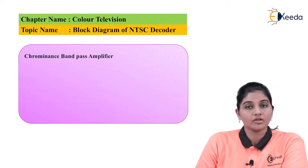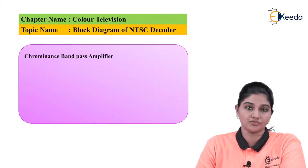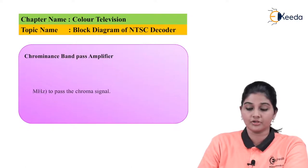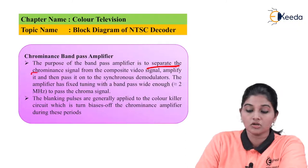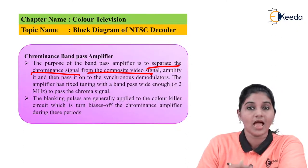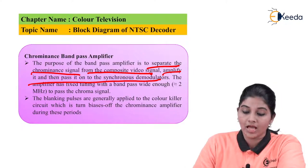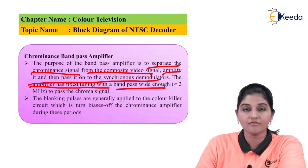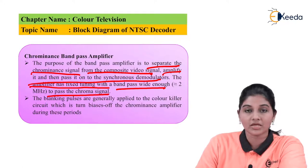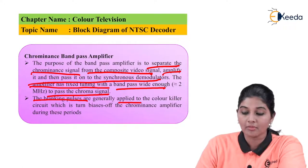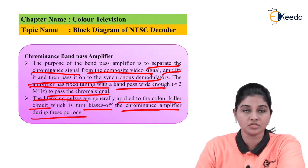The next circuit used in the NTSC decoder is the chrominance bandpass amplifier. As its name indicates, it acts as a filter. The purpose of the bandpass filter is to separate the chrominance signal from the composite video signal, amplify it, and then pass it to the synchronous demodulator. The amplifier has fixed tuning and a bandpass frequency of approximately 2 megahertz that passes the chroma signal. The blanking pulses are applied to the color killer circuit which turns off the chrominance amplifier during this period.